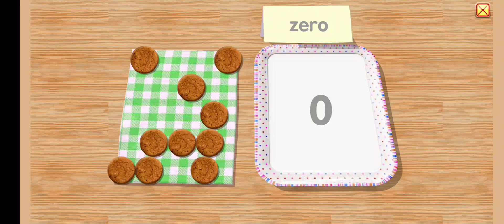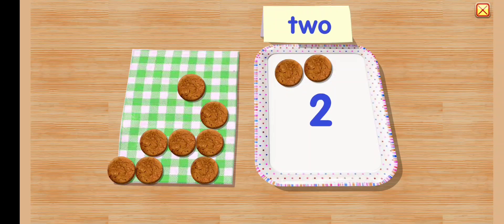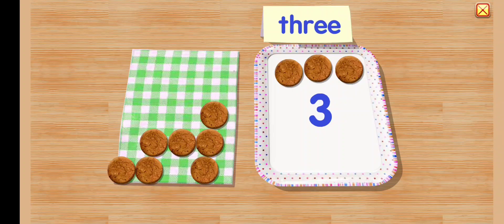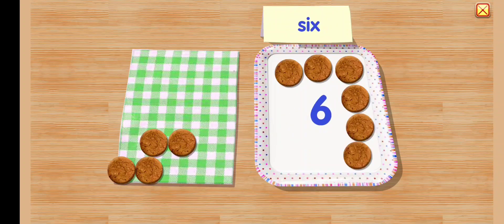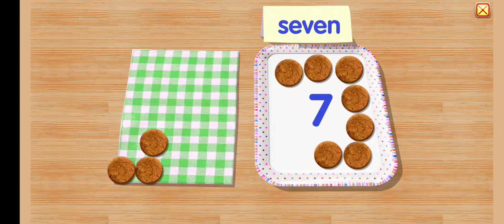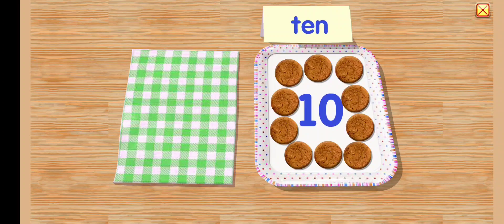Place cookies in the tray to count up. Take cookies out of the tray to count down. One, two. You added one. Now there are three cookies. You added one. Now there are four cookies. Five, six, seven, eight, nine, ten.